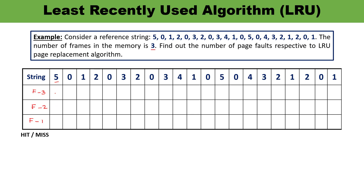The first digit is 5. All the frames are empty, so 5 will be stored here — this is the condition of miss. When 0 comes, 5 is already occupied, so 0 will be placed in the next frame — also a miss. The third digit is 1; 0 and 5 are already available, so 1 will be stored in the third frame — also a miss. Now all three frames are occupied, which were initially empty.